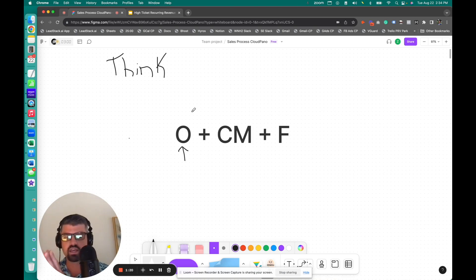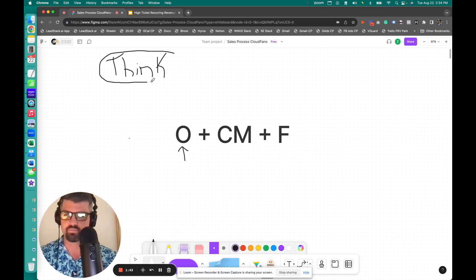So we have this formula of O plus CM plus F. What this stands for first is you must have an offer. So let's talk about it, what are we offering here? What is High Ticket? And when we understand the entire offer plus conversion mechanism plus fulfillment formula, we'll be able to really visualize and do what we're thinking about.